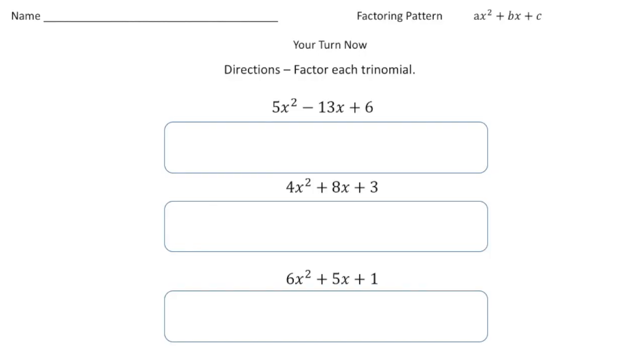All right. Welcome back. Let's see how you did with these practice problems. So these probably should have taken a little while to do. You're going to really mess up a lot of times at first. But this one should have been 5x minus 3, and then x minus 2. And both of these have to be subtraction signs because a negative times a negative will give us a positive. But if you notice, the middle term is a negative. That's why they both have to be negatives.